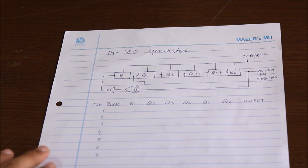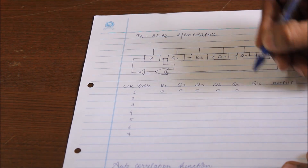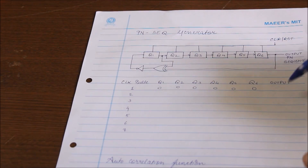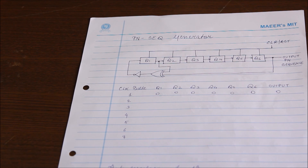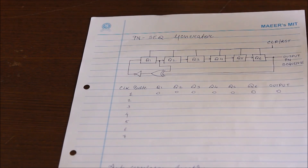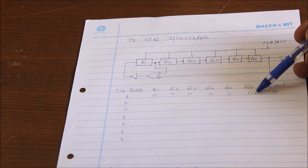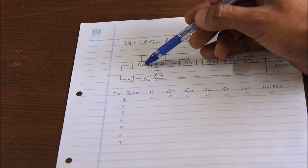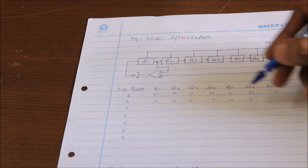Initially, all stages of the PN Sequence Generator are 0, and we are taking the output from shift register Q6. So the output of the first clock pulse would be 0. In the second clock pulse, the content of each shift register is shifted to the next one — Q4 to Q5, Q5 to Q6, and so on. The output of Q6 and Q1 are XORed: 0 XOR 0 equals 0. This 0 is inverted by the NOT gate, so Q1 becomes 1 and the remaining bits are 0, giving an output of 0.